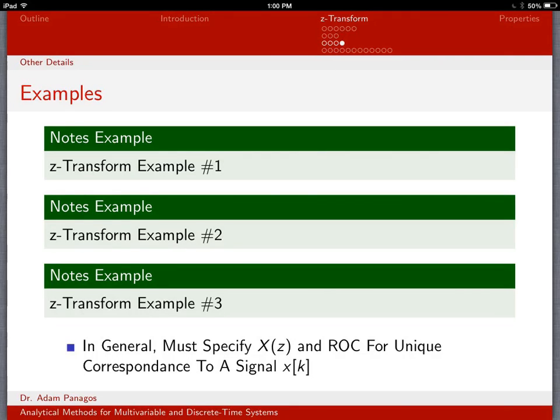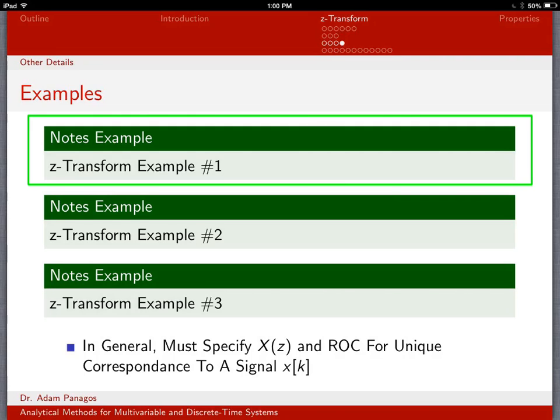All right, so we've been talking at length about the Z-transform, defining it, talking about this region of convergence, talking about how we can get the DTFT out of the Z-transform. Finally, now, let's actually work through a set of examples where we'll actually get some practice at evaluating the Z-transform. So first, let's do Z-transform example one.